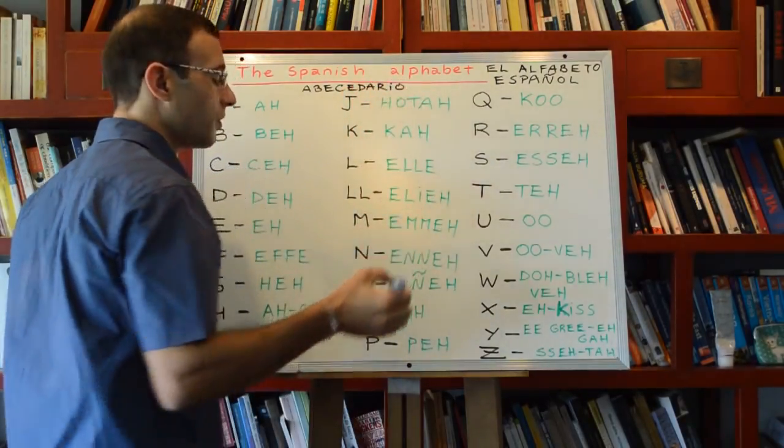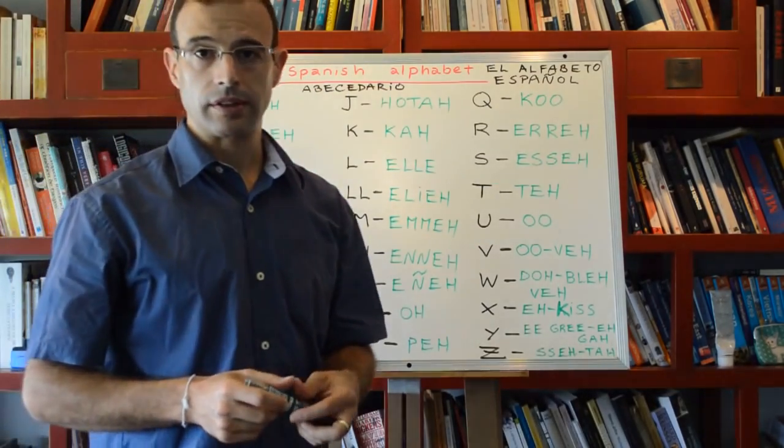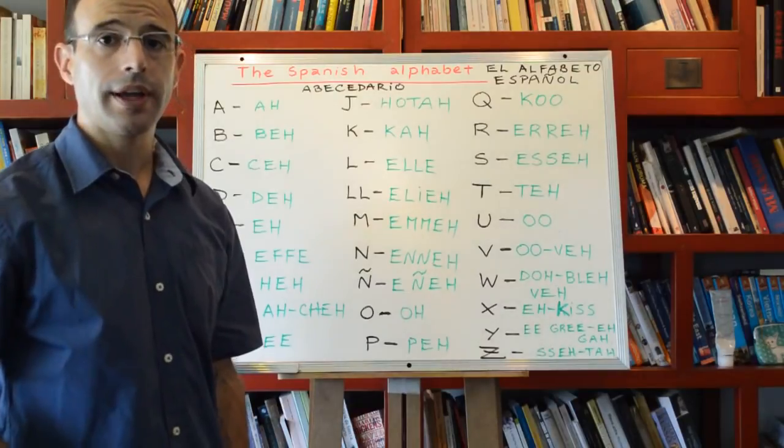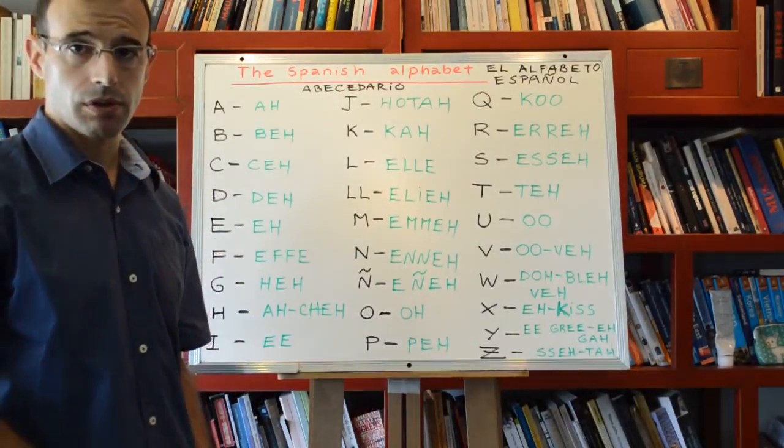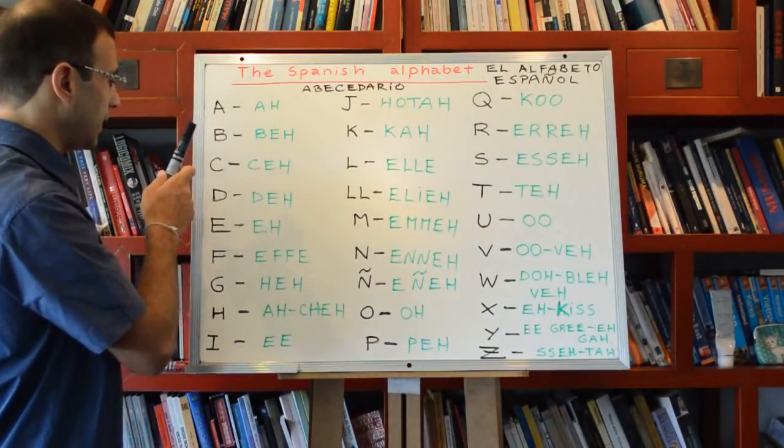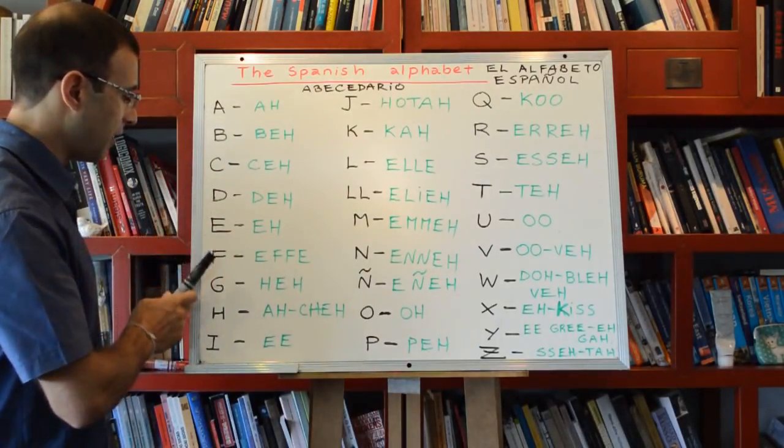Both words are correct: el abecedario español or el alfabeto español.